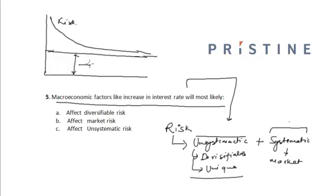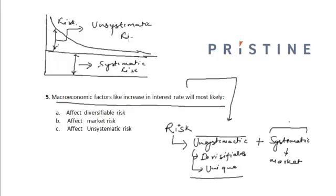The part where the total risk profile of the portfolio becomes asymptotic to a parallel line is known as the systematic risk, and the remaining part — the diversifiable or unique risk — is the unsystematic risk. Usually, if a portfolio contains more than 30 securities, the entire unsystematic risk gets diversified away, and what remains is only the systematic risk or market risk, which is dependent upon macroeconomic factors like interest rate or GDP.